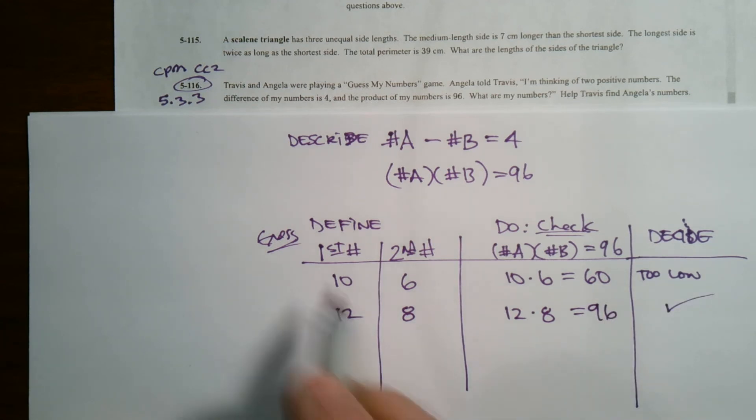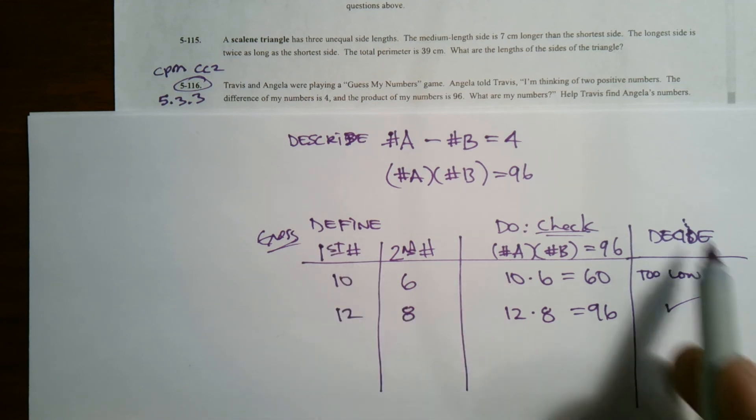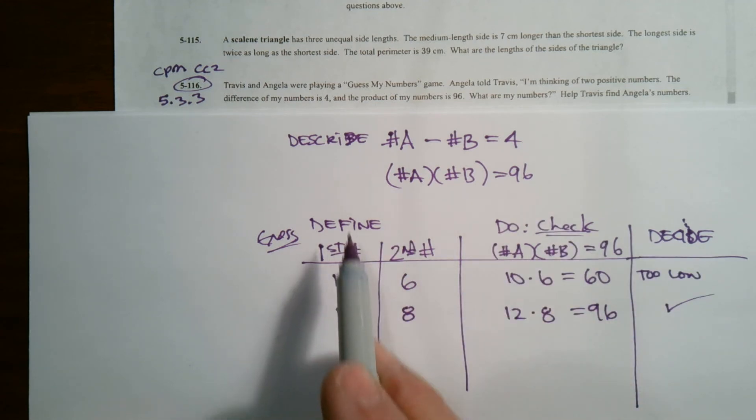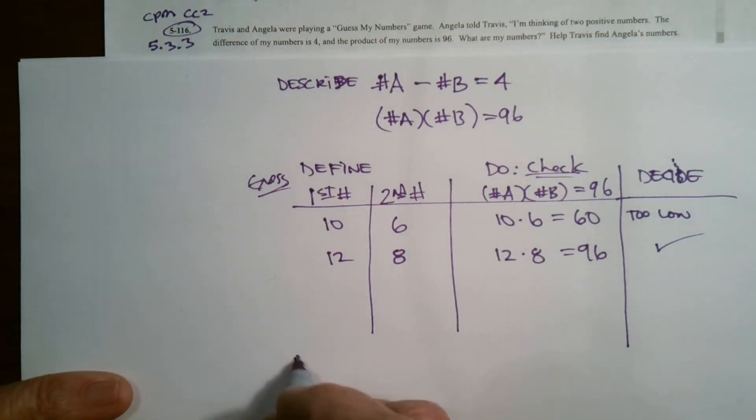So that process of guess and check is creating the table, knowing what you're going to be guessing on and how to find the next values in order to come up with my final answer. So the last thing we do is declare in this 5D process.